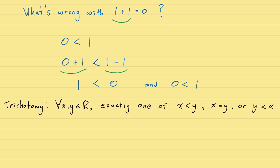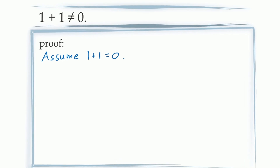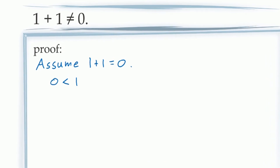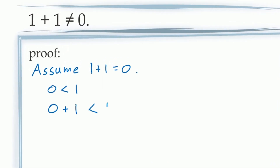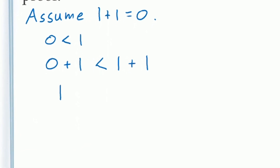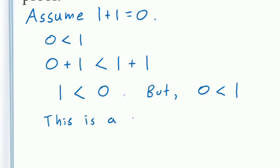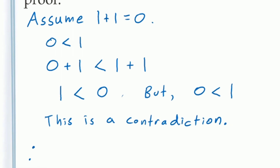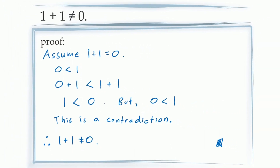Let's return to our proof. Here we start with the inequality 0 is less than 1 from proposition 4. We can add 1 to both sides. On the left-hand side, we know that 0 plus 1 is 1 by axiom A3. On the right-hand side, we know that 1 plus 1 is 0 because of our assumption. This gives us the inequality 1 is less than 0. We now have the two inequalities 0 is less than 1 and 1 is less than 0, which is a contradiction to the trichotomy axiom. And this completes the proof.